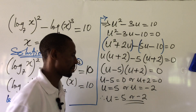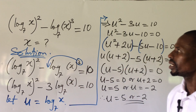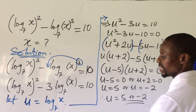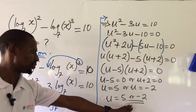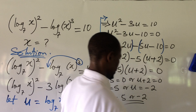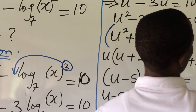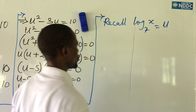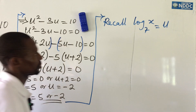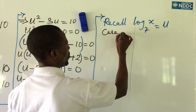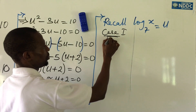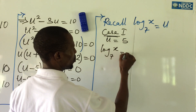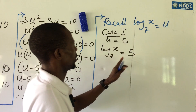We don't have u at the beginning of our equation — we have x. We recall we said let u equal log_x(7), so we substitute the two values of u back into this expression. Recall: let log_x(7) equal u. Case 1: u equal to 5, so log_x(7) equal to 5.